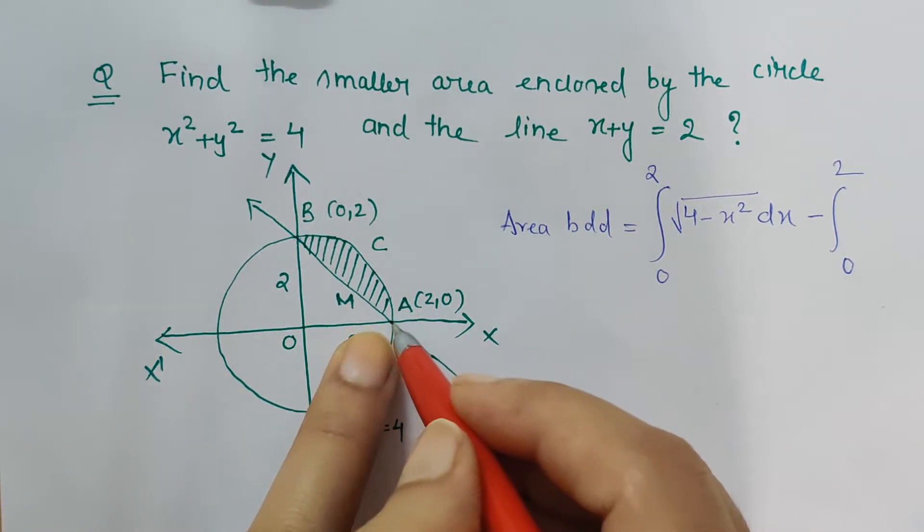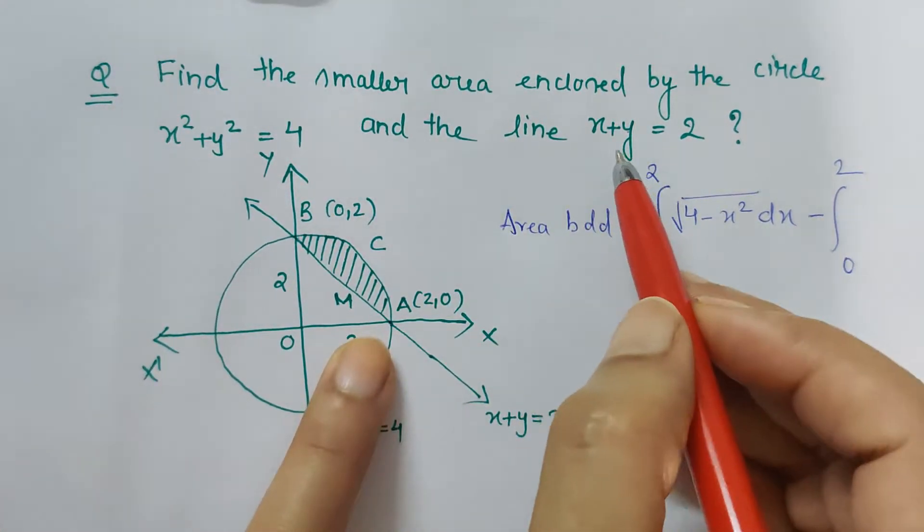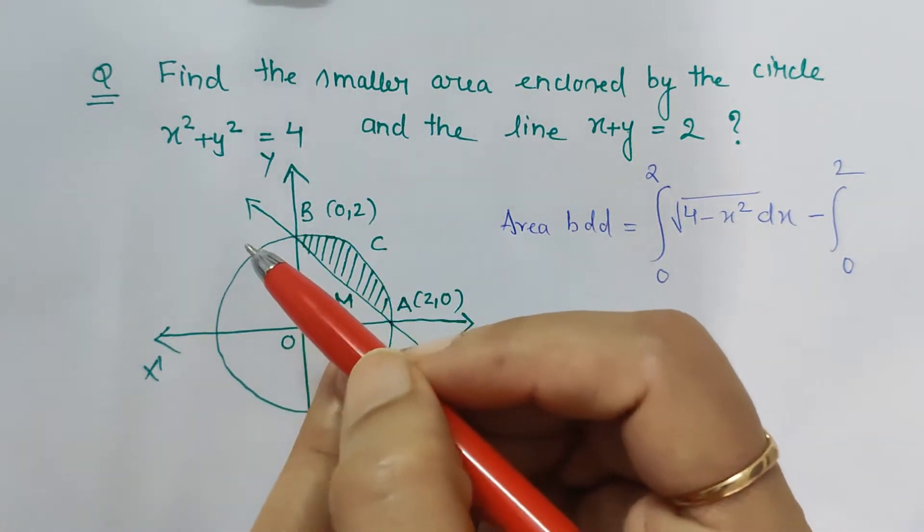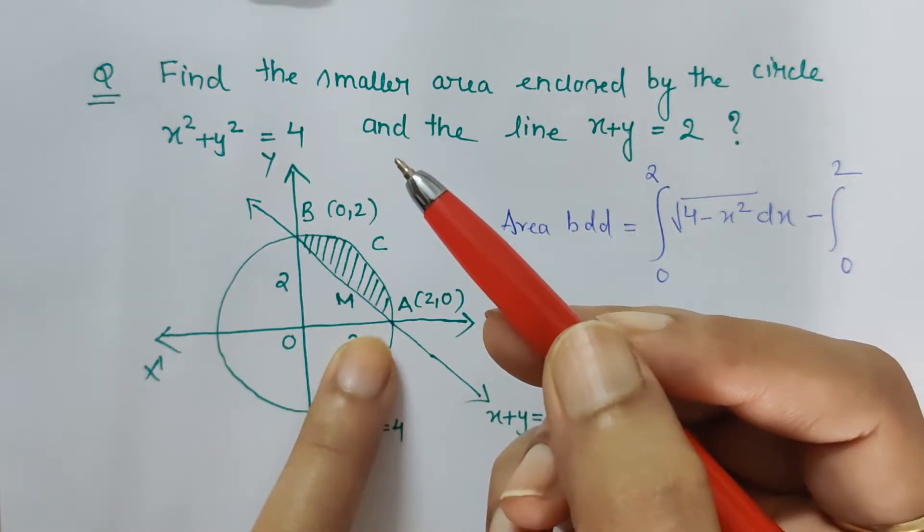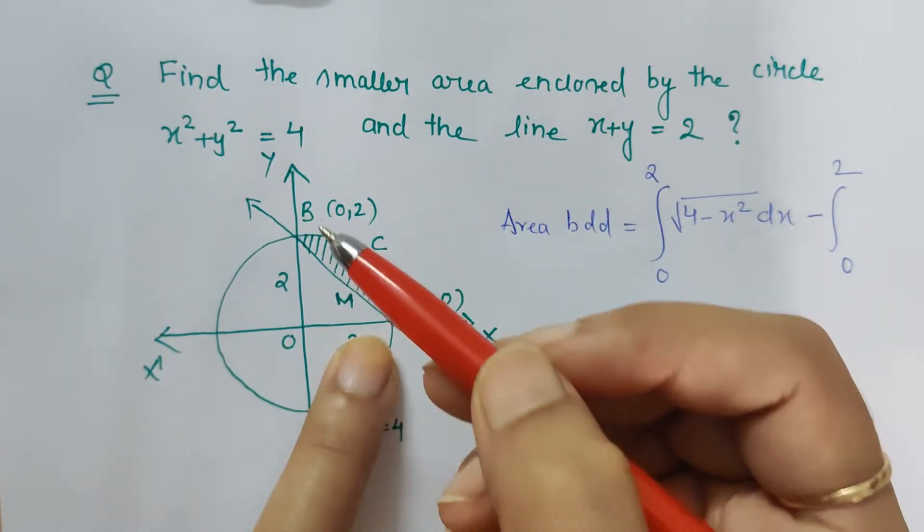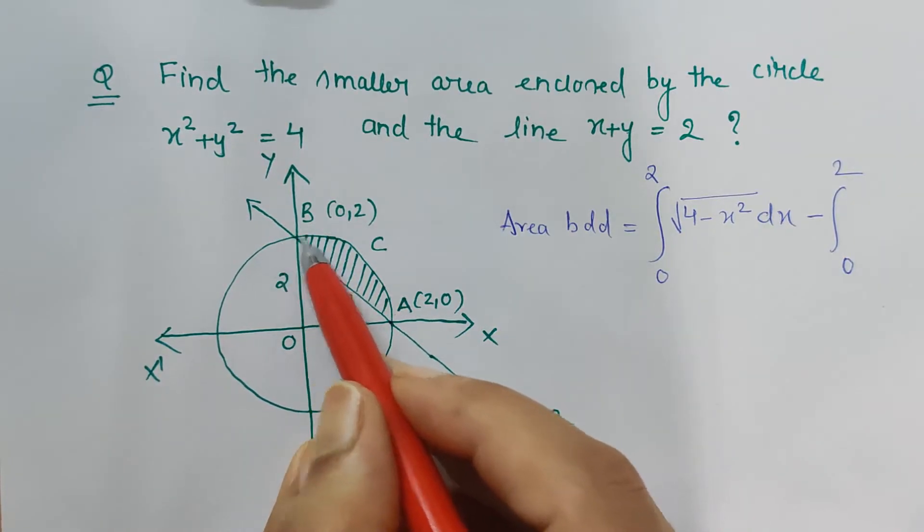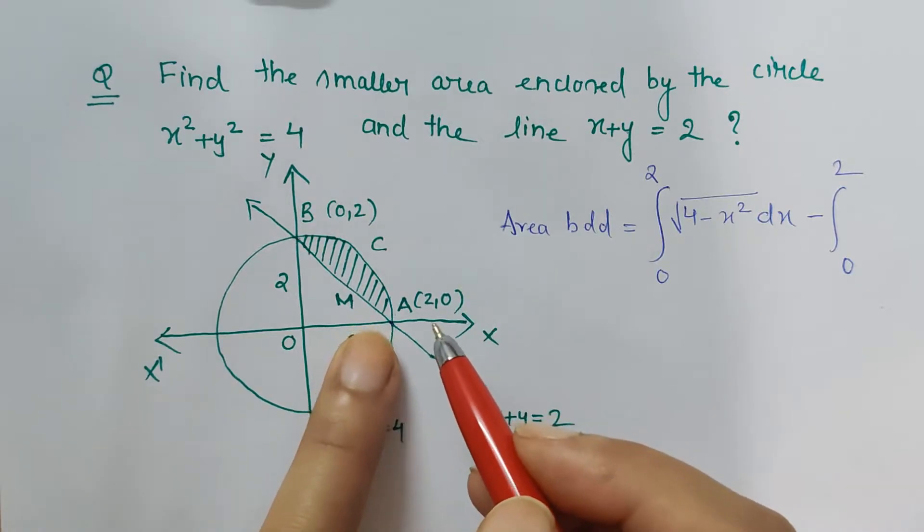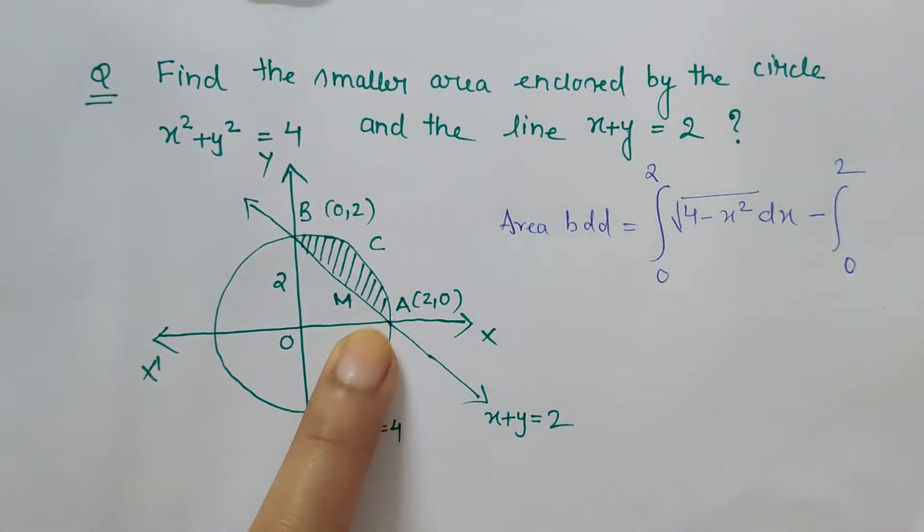How did we find this point of intersection? By combining these two equations—by putting y = 2 - x in the circle equation and solving for x, which gives us the x coordinate and corresponding y coordinate. This gave us these two points of intersection where the circle and line intersect each other. The first and most important thing in every such question is finding these intersection points.